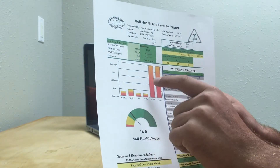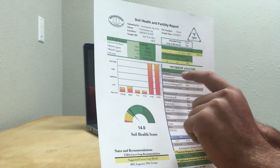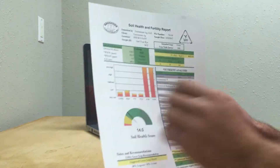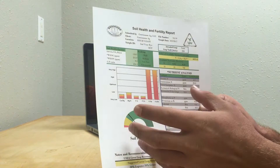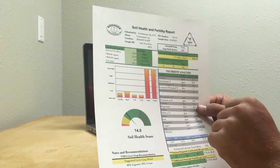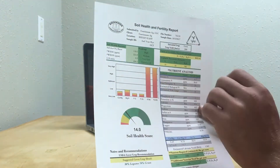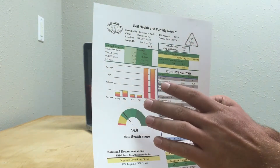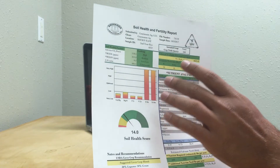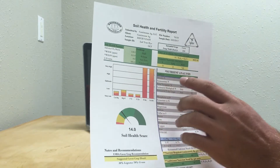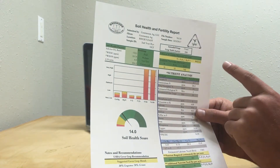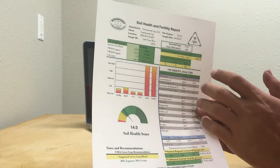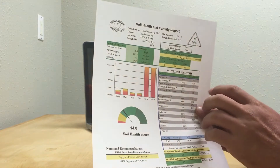The big difference with the Haney test is that it uses a different extraction than typical testing — a weak acid extraction that is more representative of what's actually available to the plant. So this report is really looking at a snapshot: what is available to the roots today? We're looking at not only N, P, and K and micronutrients, but also microbial activity and soil biology — the food that is available for the microbes.